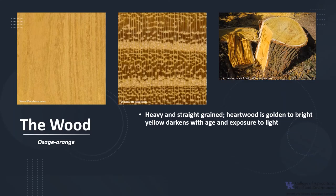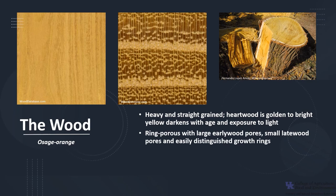The wood is heavy and straight grained. The heartwood is golden to bright yellow, which will darken with age and exposure to light. It is a ring-porous species with large to very large early wood pores about two to three wide — wood formed in the early part of the growing season — with small latewood pores, which is wood formed later in the growing season, as you can see in the middle photo.